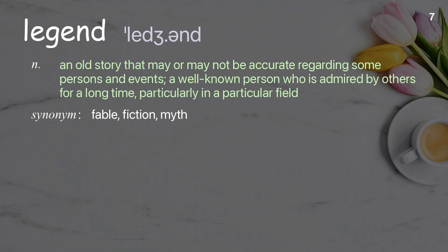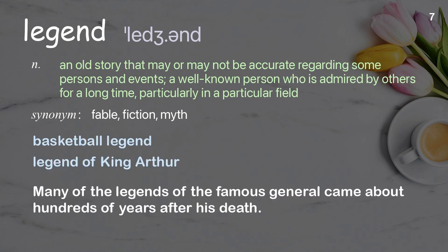Legend: an old story that may or may not be accurate regarding some persons and events; a well-known person who is admired by others for a long time, particularly in a particular field. Examples: basketball legend, legend of King Arthur. Many of the legends of the famous general came about hundreds of years after his death.